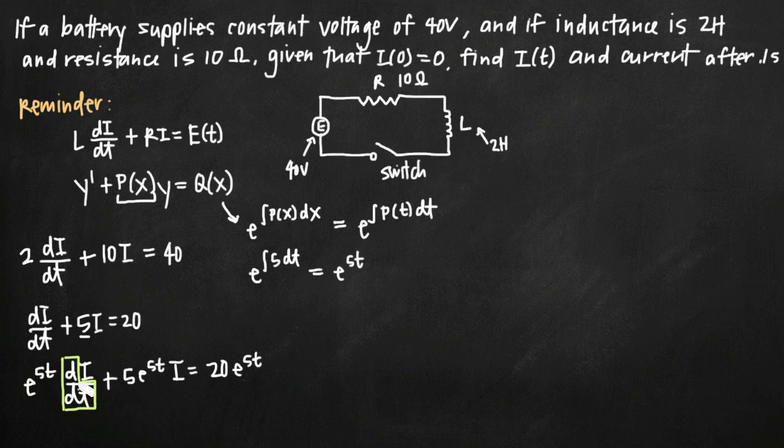We just want to take the d/dt part here, and move it out in front of this term. So what we get is d/dt of e^(5t) times i, because i was the only thing that was left of that, equals 20e^(5t).